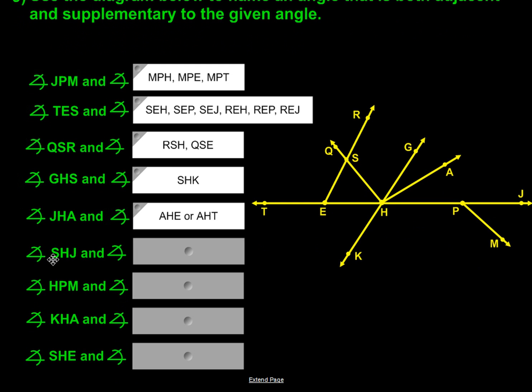The next angle that we're given is SHJ. So we have an obtuse angle here. And so the other side of that is going to be an acute angle on this side, which would be SHE or SHT. Extend it out to there. But together, they would create 180 degrees.